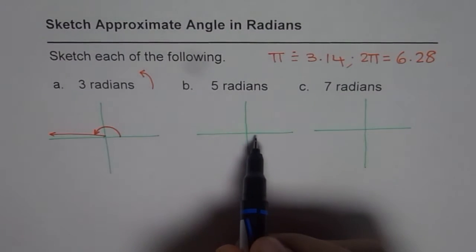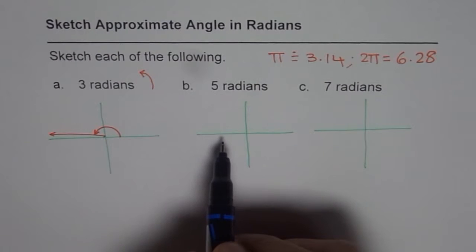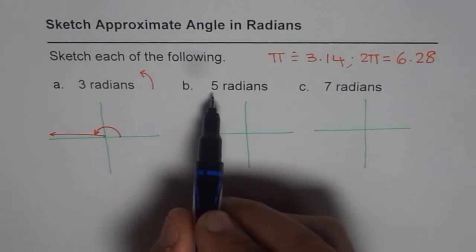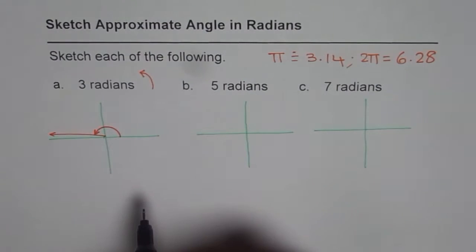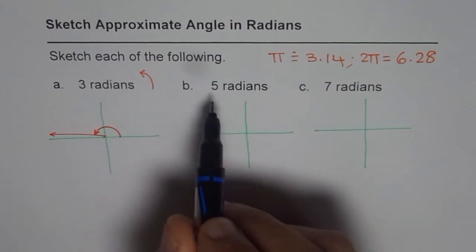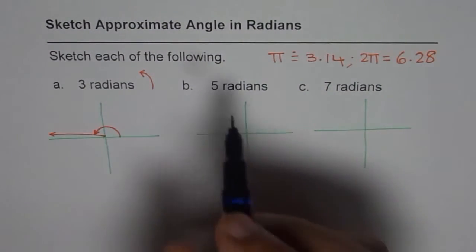Since we always see angles, radian angles in terms of π, right. Now 5 radians. 5 radians, one way is you can convert to degrees to get an idea, right.